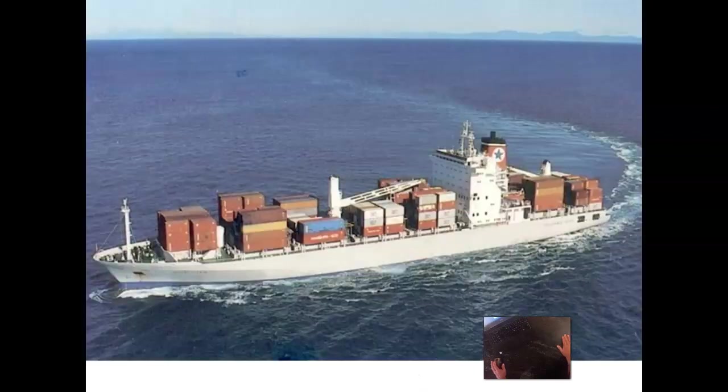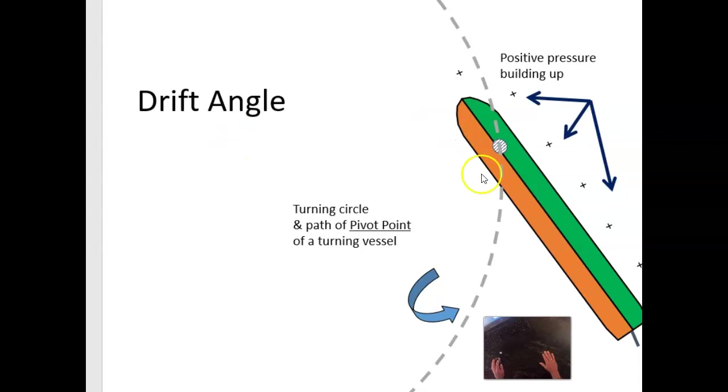We had then looked at some vessels that were turning. We could imagine that the pivot point was right here. And we saw how the stern is kicking out and the bow is kicking inside the turning circle. And that's what we had talked about here, the bow, everything forward to the pivot point as compared to everything after the pivot point.